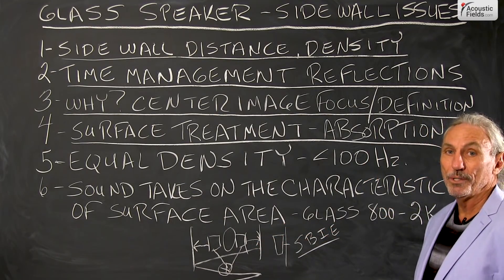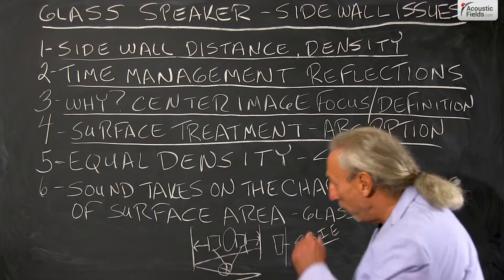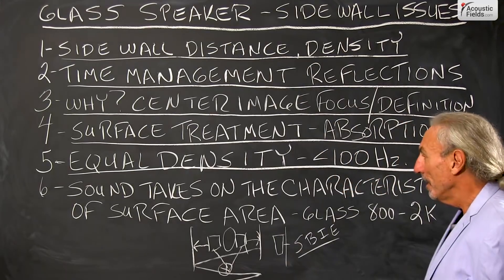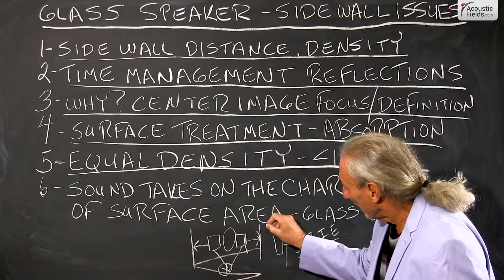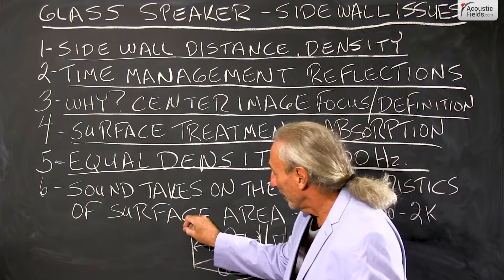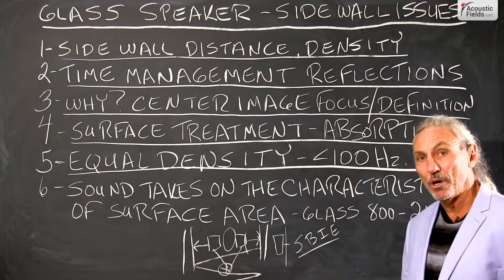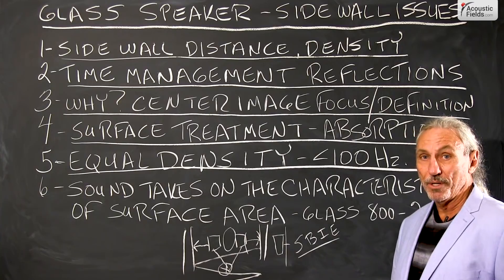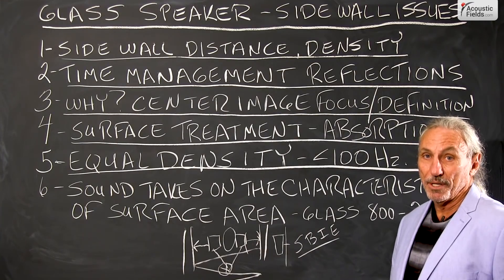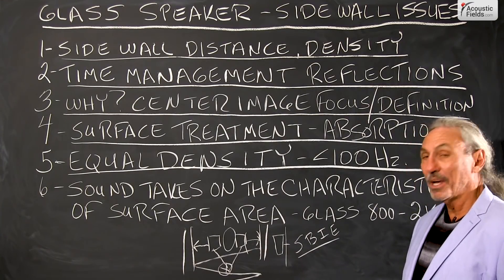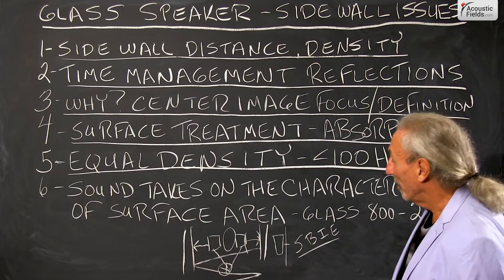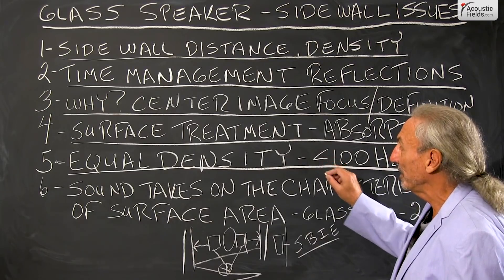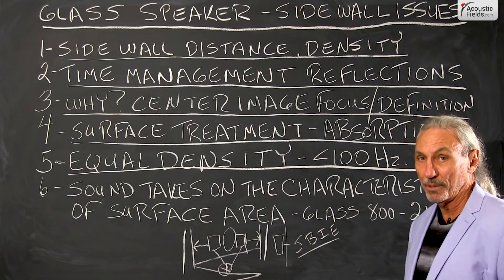There is no one size fits all. Equal density on the sidewalls is very critical. In that photo we have glass on one sidewall — I don't know what's on the other because it really doesn't matter. You can't have that situation at all. The bottom line is we have to have equal density in the structure for lower frequencies.